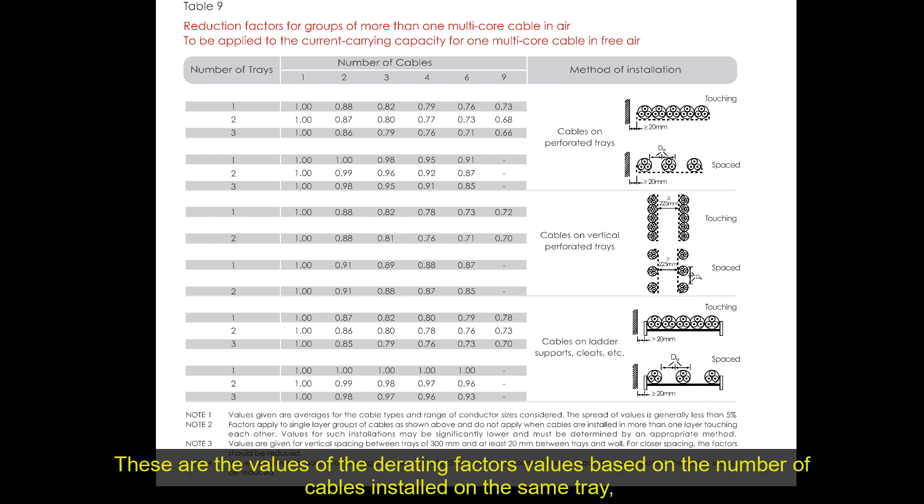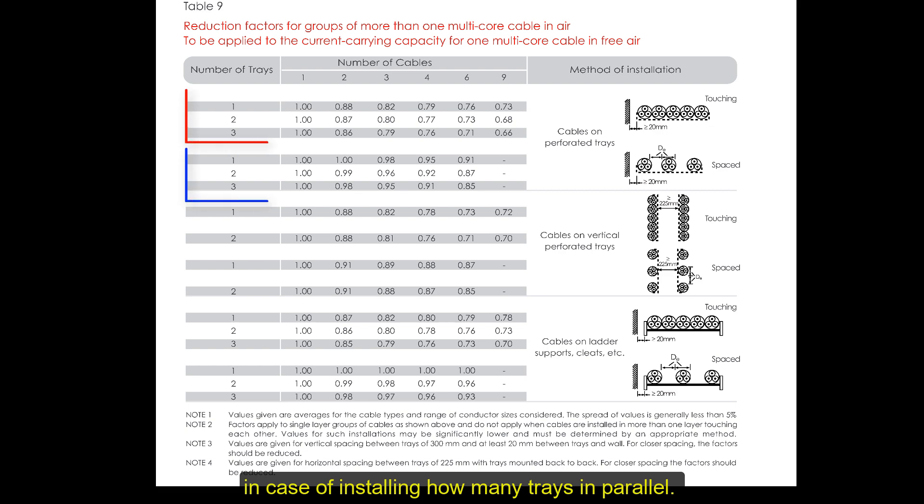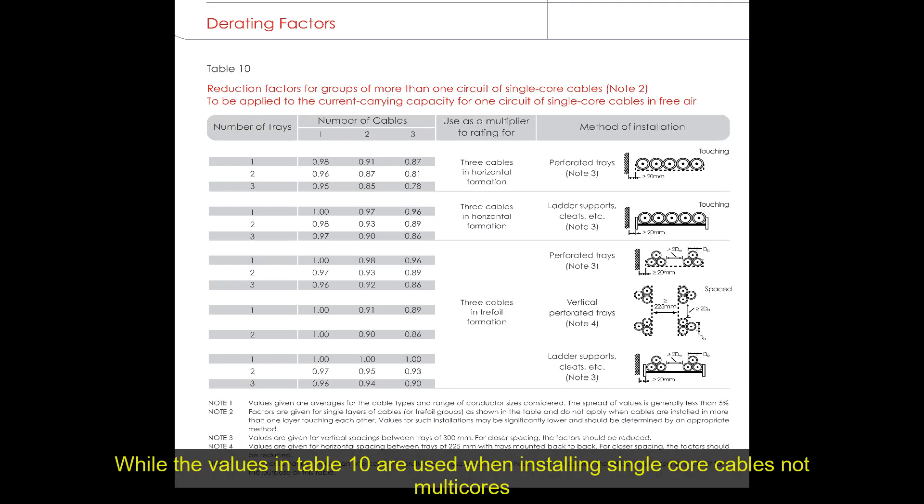These are the values of the derating factors based on the number of cables installed on the same tray, in case of installing multiple trays in parallel. While the values in table 10 are used when installing single-core cables, not multi-cores.